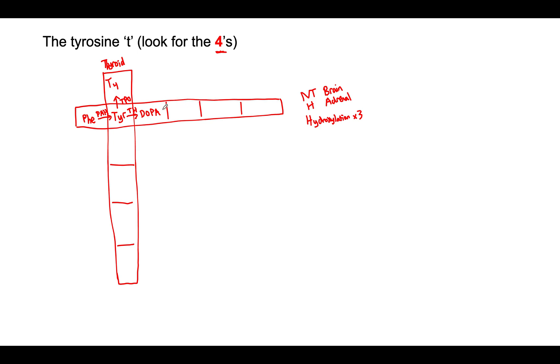DOPA itself can be converted into two different molecules. So first, it can be converted, interestingly, into melanin. And this is by which enzyme? That's right, tyrosinase. We're just going to call it, leave it with a T here.